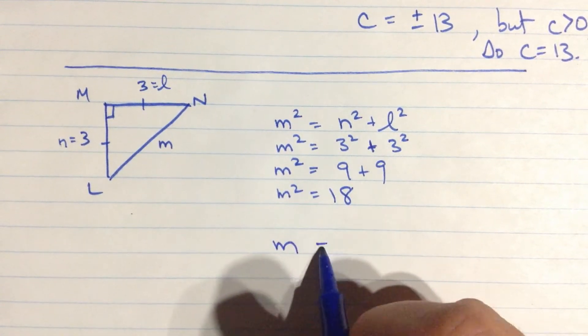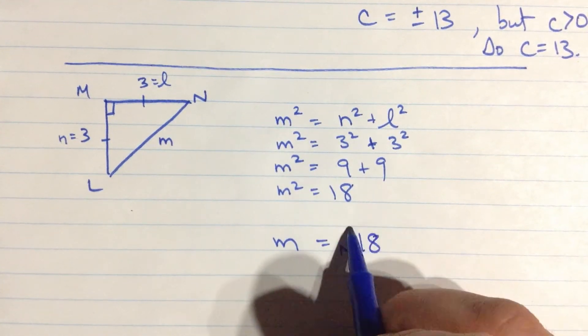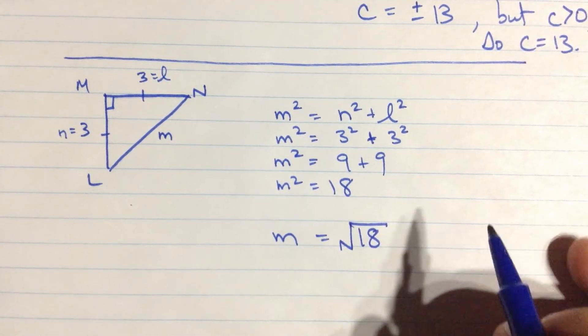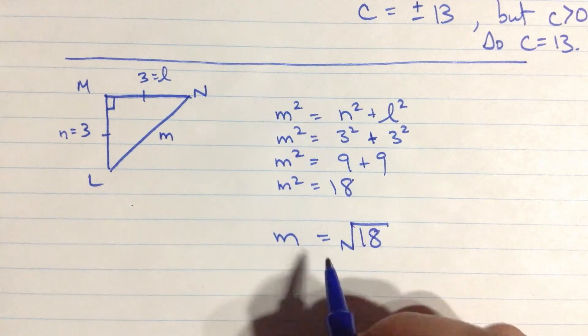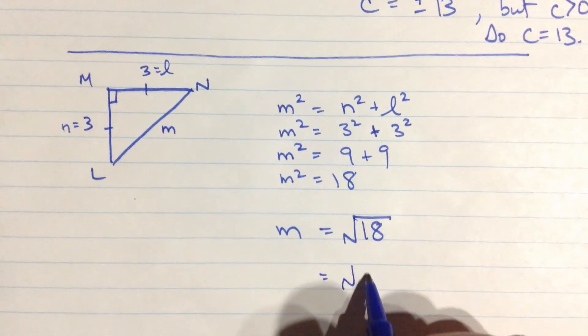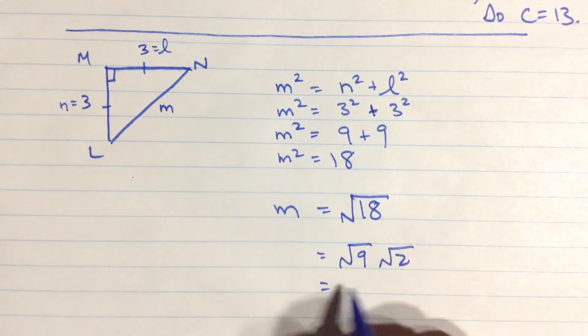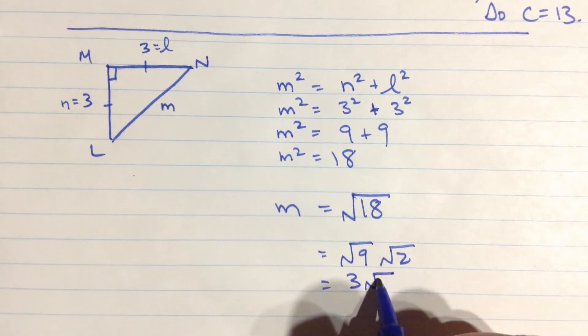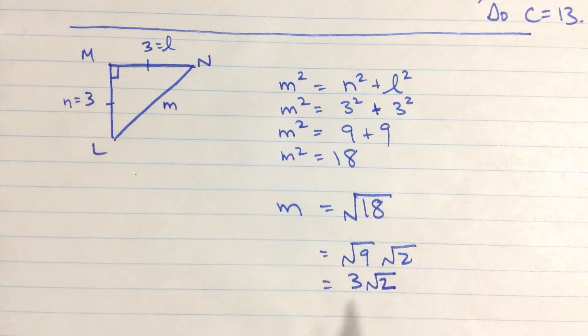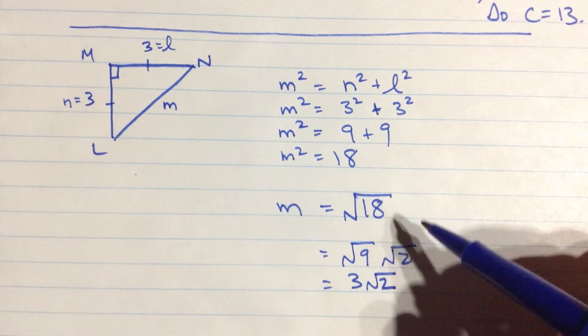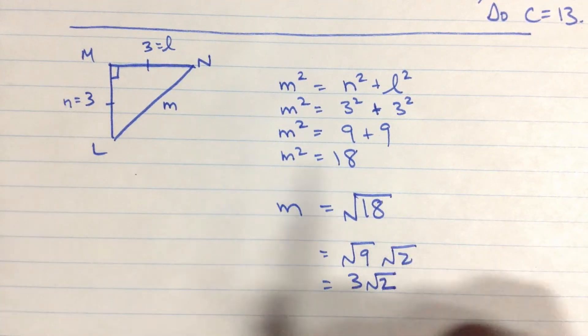And that means, then, that M is equal to the square root of 18, which isn't a super nice number, but you could rewrite it as root 9 times root 2, because we know what root 9 is, root 9 is 3. So we have 3 root 2, is a little bit nicer way to write that, as a mixed radical.